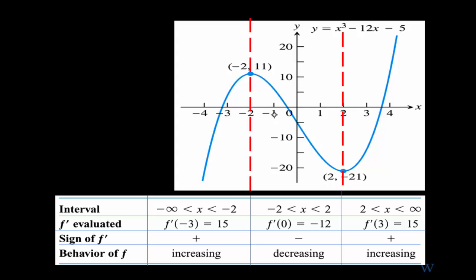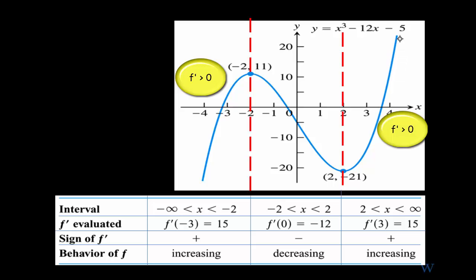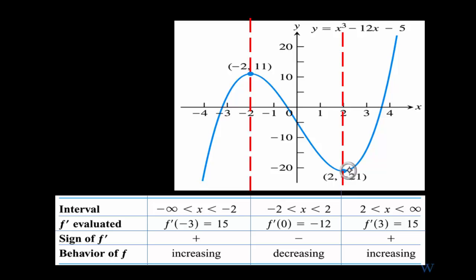Now we can determine the behavior of the graph from the signs of the derivative. The graph is increasing, then decreasing, then increasing again. Plugging x = −2 into the original function gives y = 11, and plugging x = 2 gives another y value. This lets us plot the critical points and confirm the graph is increasing from −∞ to −2, decreasing from −2 to 2, and increasing again from 2 to +∞.